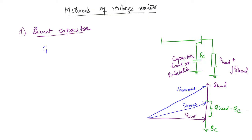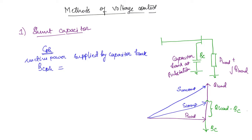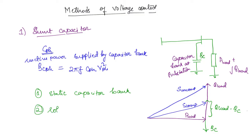If the per-phase capacitance given in the capacitor bank is C_phase, then the reactive power supplied by the capacitor bank per phase is Q_C_phase, which equals 2π f C_phase V_phase squared. The shunt capacitor can either be in the form of a static capacitor bank, or a rotating synchronous motor. When the synchronous motor is over-excited and running under no load, it will act like a capacitive load.